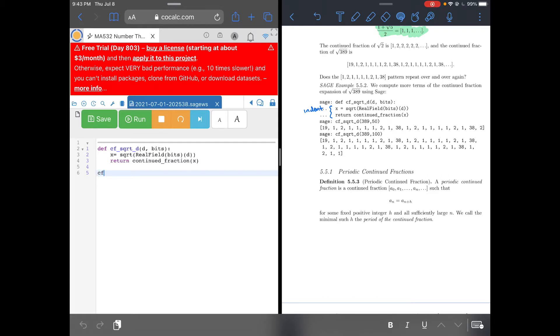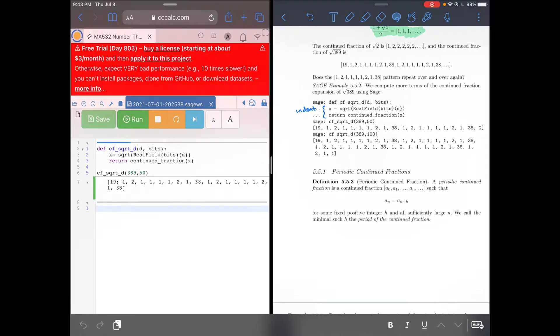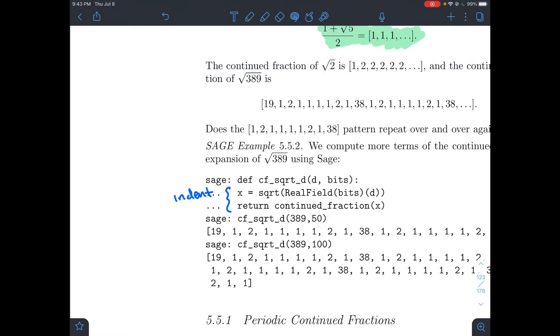To recreate what's going on, I'll do CF_sqrtd of d equals 389 like it has over here, and 50 bits. It spits out the same code they have on that side. Just to see that it works. That's as much as I want to do with SAGE for this video.